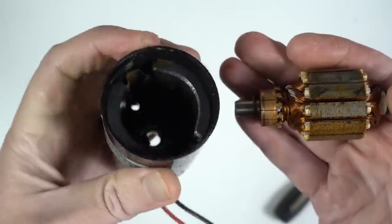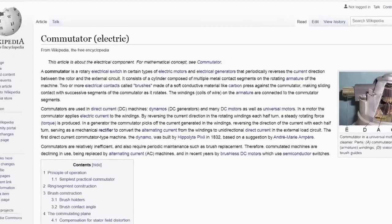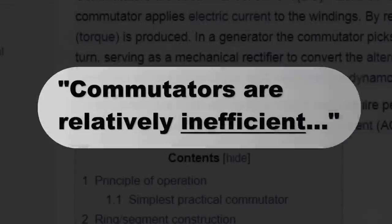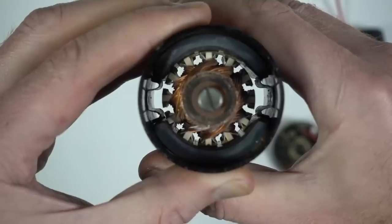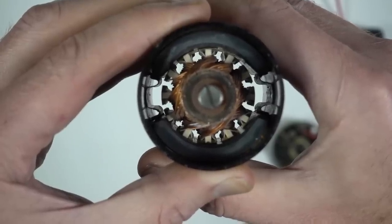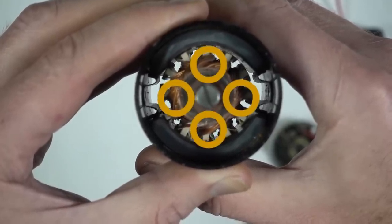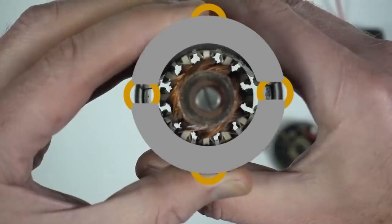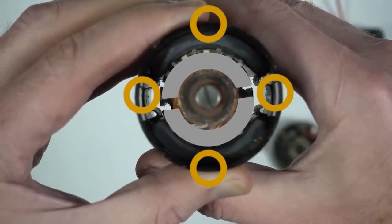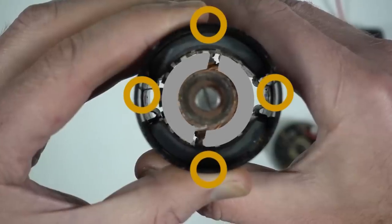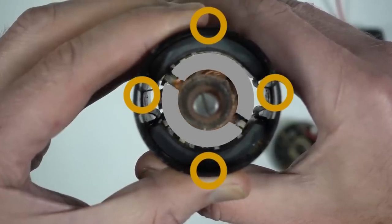But this is a source of friction and energy loss. To eliminate the need for brushes, we're going to flip this design inside out, moving the wires to the outer stationary part and the magnets to the inner rotating part. That way we can connect to the wires directly without brushes.